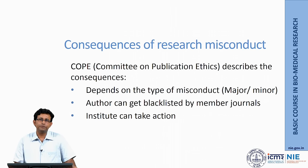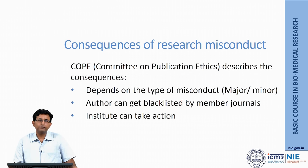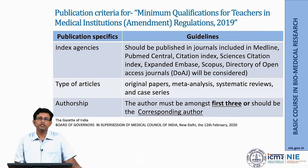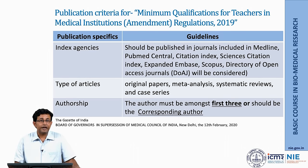Consequences of any research misconduct can be dealt with seriously. The Committee on Publication Ethics describes consequences depending on whether the misconduct is major or minor. If found to be a major one, the author can be blacklisted by all member journals, and the institute can be informed and take action. I have also summarized existing guidelines related to publication for academicians in Indian institutions, covering index agencies, types of articles, and authorship criteria required for promotion and career progression.